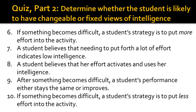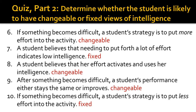Let's see how you did. For number six, when something becomes difficult, students with changeable views of intelligence will try harder because they believe that they can succeed with the appropriate effort and strategies. Number seven is consistent with a fixed view because students with a changeable view understand that effort is needed to learn more. This is exactly the point of number eight, which is why this student has a changeable view — effort is needed to activate and use her intelligence. For number nine, it is changeable because the difficulty of the activity would not affect the student's performance, or might actually improve it because he tries harder. In comparison, a student with a fixed view would be likely to put forth less effort into difficult activities — this is why the answer to number ten is fixed.